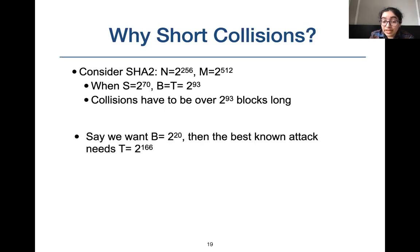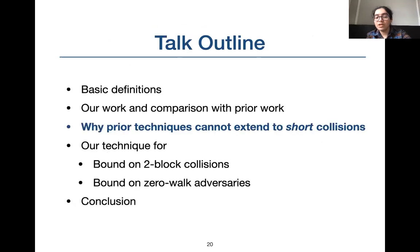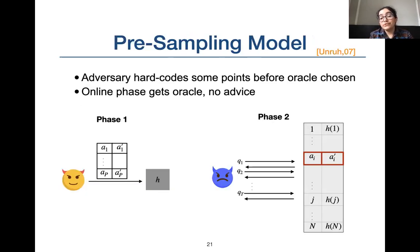So in this work, we study bounded-length collisions. The best known attack, an extension of Coretti et al., achieves an advantage of stB/n. For b = 2^20, the best known attack requires 2^166 queries to achieve constant success probability, as opposed to 2^93 queries for finding unbounded collisions. We then show how techniques from prior works do not extend to our model of bounded-length collisions — and this is what makes our work interesting.